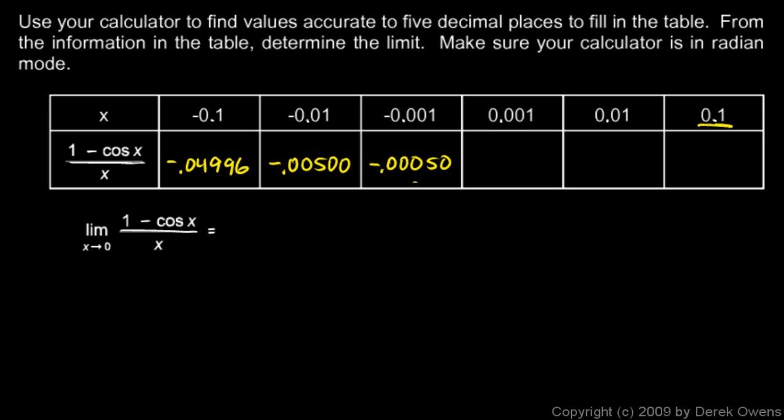And then continuing here, let's start over here at 0.1. We got positive 0.04996. And then at 0.01, we got 0.00500. And at 0.001, we had 0.00050.